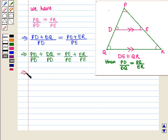And this further implies that DQ upon PD is equal to ER upon PE.